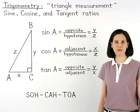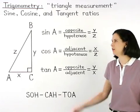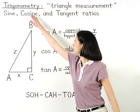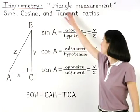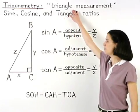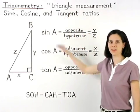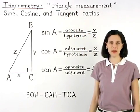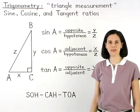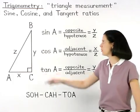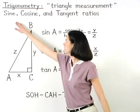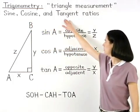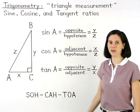The title of this unit, Trigonometry, is Greek for Triangle Measurement. Three of the most basic ideas in trigonometry are the sine, cosine, and tangent ratios.